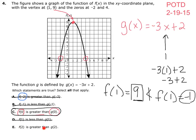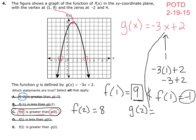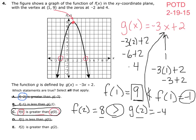E says f of 2 is greater than g of 2. When x is 2, y is up at 8, so f of 2 equals 8. For g of 2: negative 3 times 2 plus 2 equals negative 6 plus 2, which equals negative 4. Is 8 greater than negative 4? It is — so E works as well.